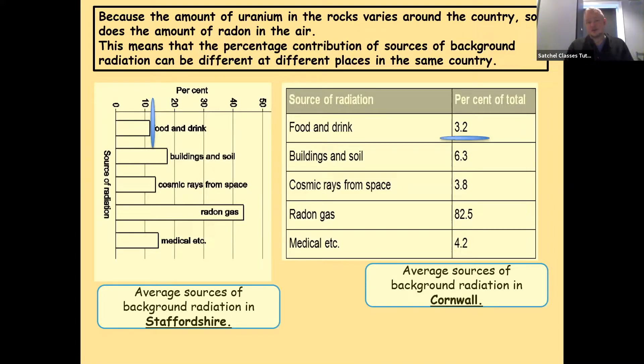Food and drink is about 12 to 13% of background radiation for Staffordshire, where it's only 3.2 for Cornwall. Buildings and soil in Staffordshire, the sources of radiation there again close to 18%, whereas in Cornwall about 6.3. Cosmic rays from space, about 15% in Staffordshire, about 3.8 of the total in Cornwall.